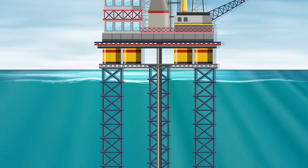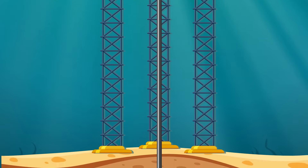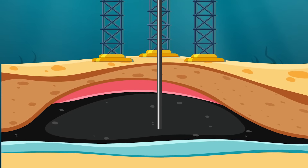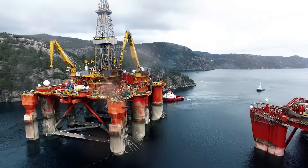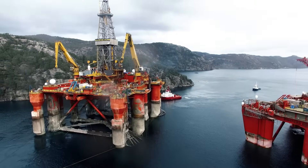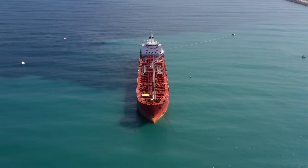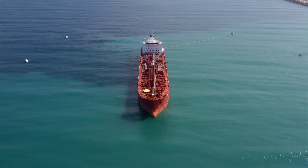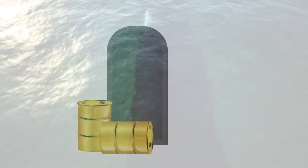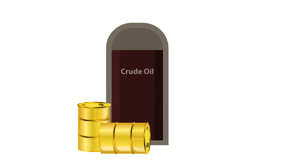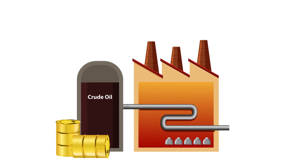The oil is extracted by drilling deep into the earth's crust and pumping the fuels to the surface. The oil is then transported by oil tankers or in pipelines to refineries, where it is made into a range of different fuels and materials.